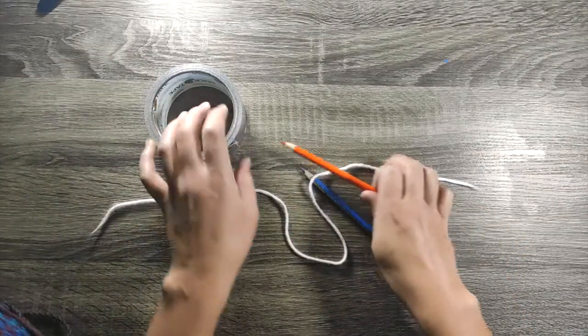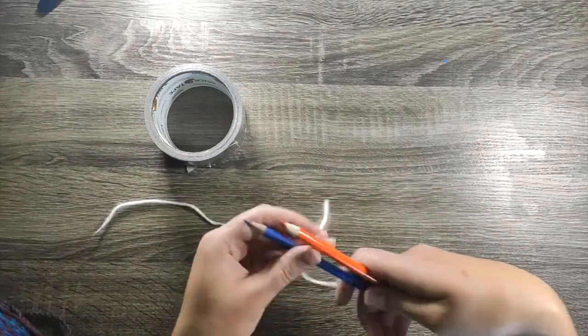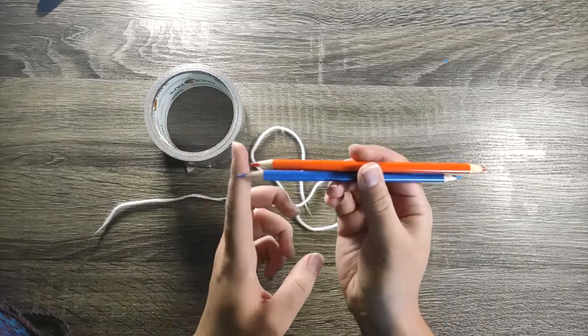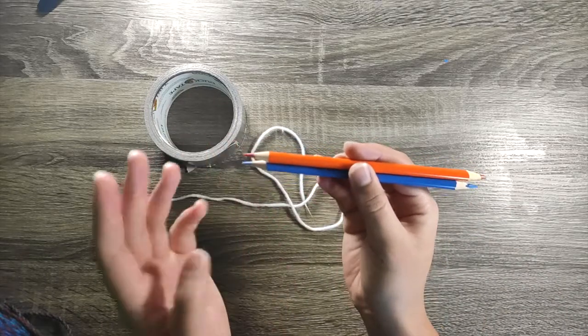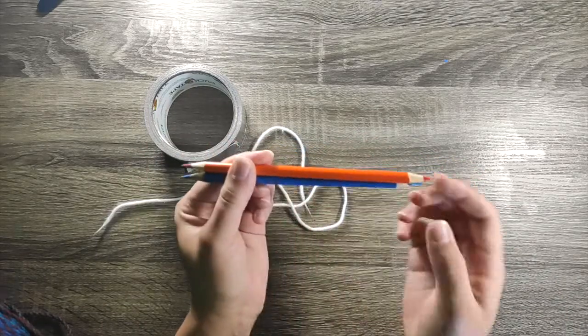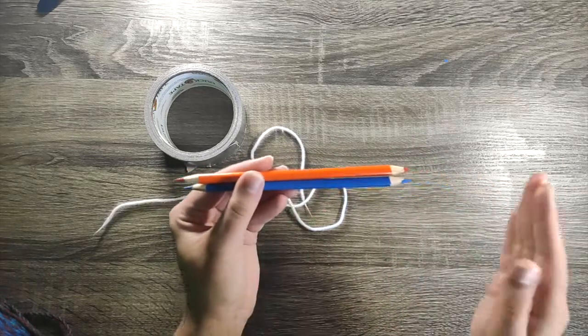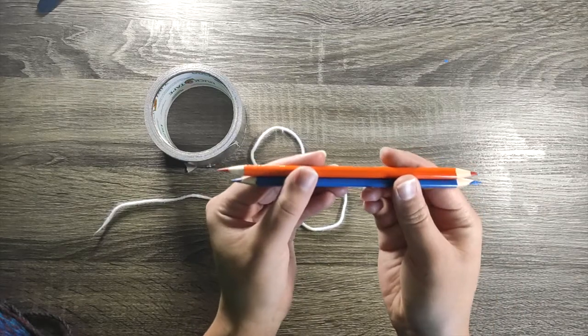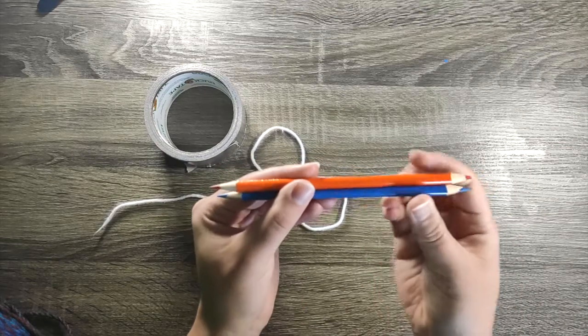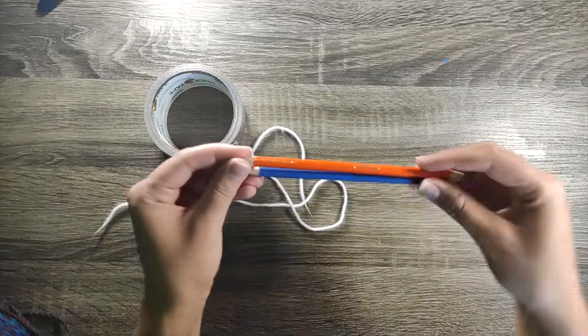So what you're going to need is your two pencils. And you're going to want to actually, instead of just sharpening one end, sharpen both ends of both of your pencils. If they're not quite the same length, that's okay, but you don't want there to be a huge length discrepancy. My blue pencil's a little bit longer than my orange pencil, but it's not going to be a super big deal.